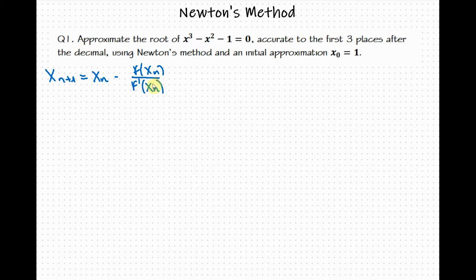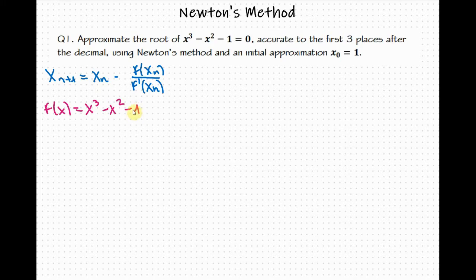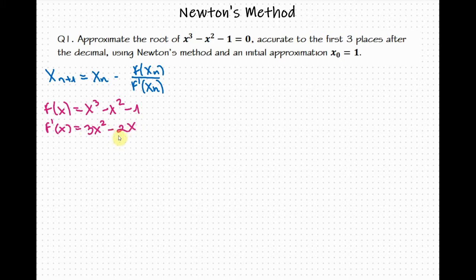Now let's go through our problem. We let our function be f of x equals x cubed minus x squared minus 1. From the general formula we can see that we need the first derivative, so f prime of x equals 3x squared minus 2x. From the problem we have our starting value x sub 0 equal to 1.